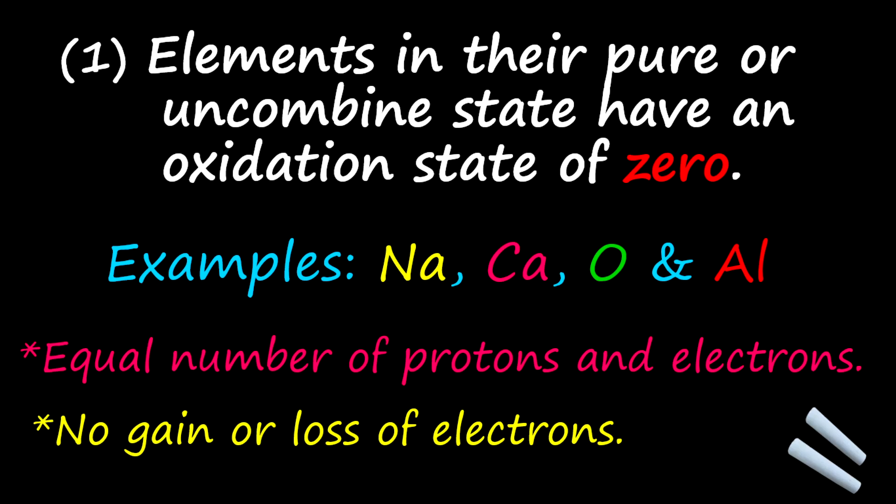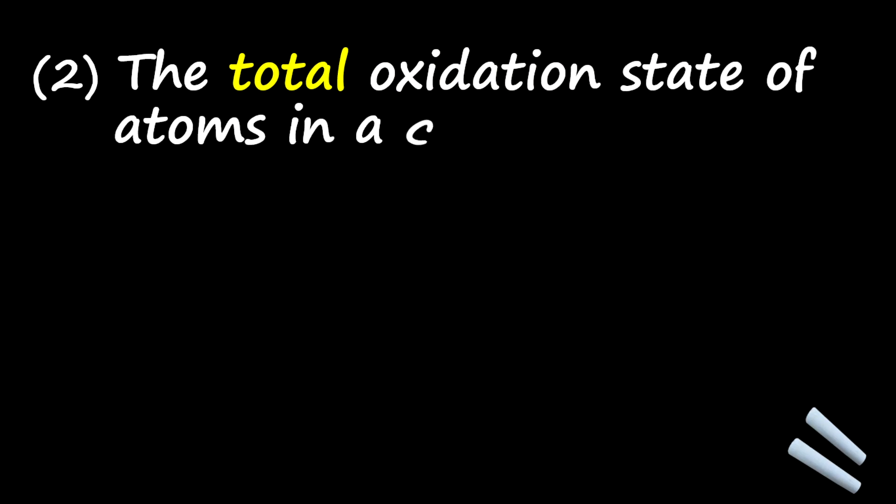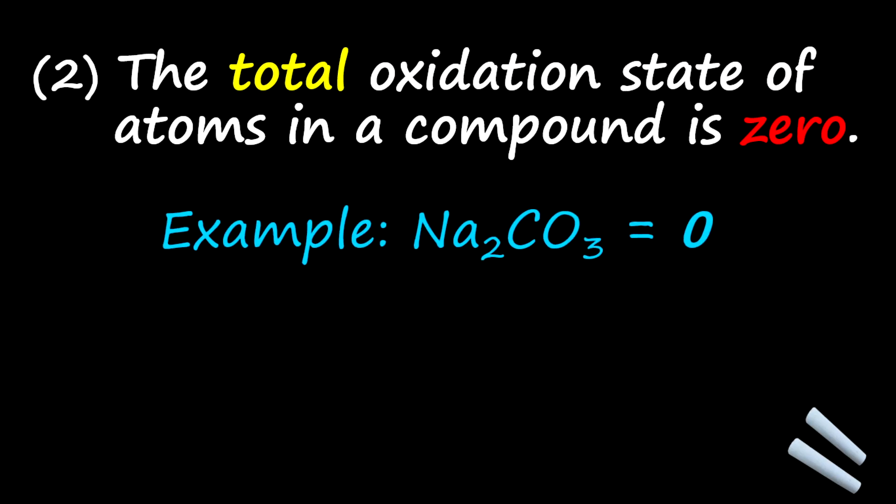Now let's jump into rule number two. The second rule is that the total oxidation state of atoms in a compound is zero. And we're talking about neutral compounds. And so an example here is sodium carbonate. The total charge on sodium carbonate is zero. Why is this so?